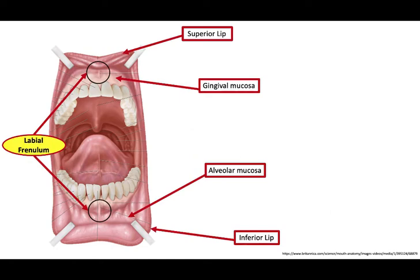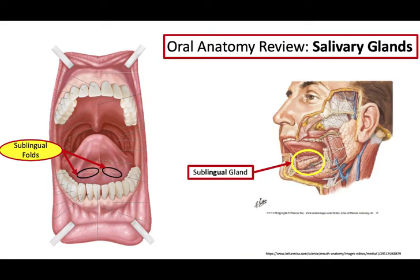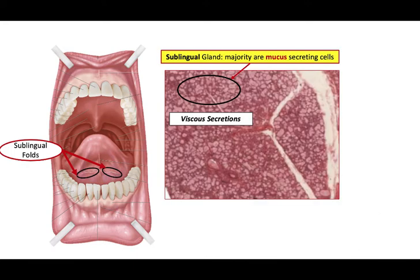The lips are attached to the gums and gingiva via the labial frenulum, and the tongue is attached to the floor of the mouth via the lingual frenulum. Running along the floor of the mouth, extending from the base of the lingual frenulum, are the sublingual folds. Deep to these folds are the sublingual salivary glands, which release their contents along the floor of the oral cavity. The sublingual glands consist of predominantly mucus-secreting cells, staining paler than serous cells, making their secretions viscous with high mucus concentrations.